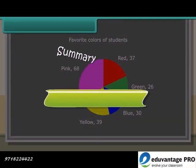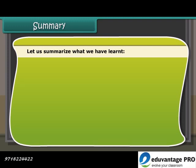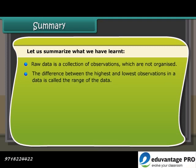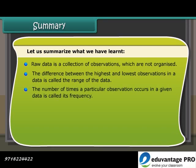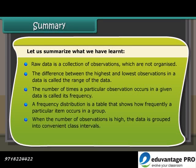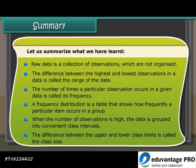Summary: Let us summarize what we have learned. Raw data is a collection of observations which are not organized. The difference between the highest and lowest observations in a data is called the range of the data. The number of times a particular observation occurs in a given data is called its frequency. A frequency distribution is a table that shows how frequently a particular item occurs in a group. When the number of observations is high, the data is grouped into convenient class intervals.